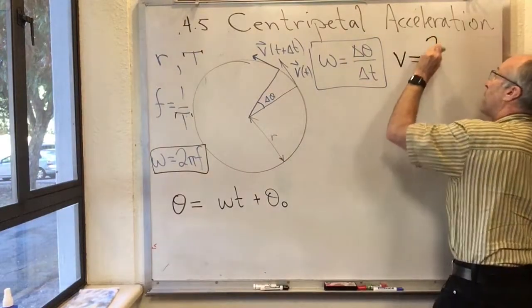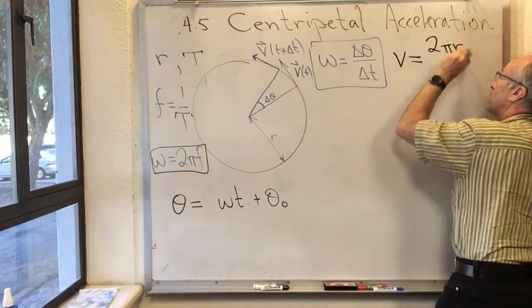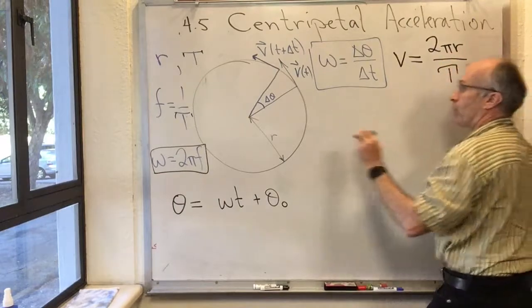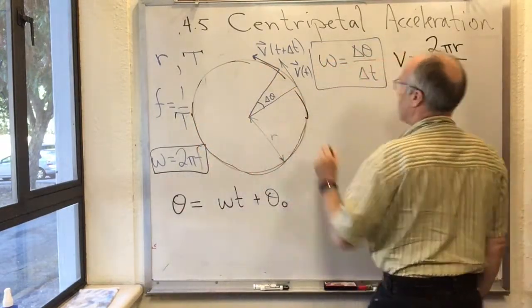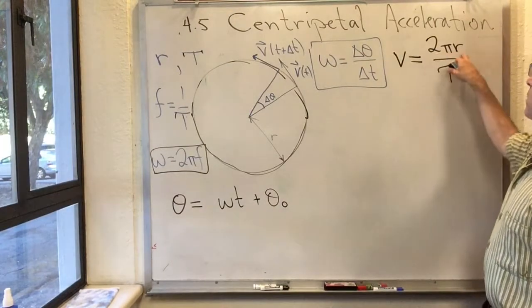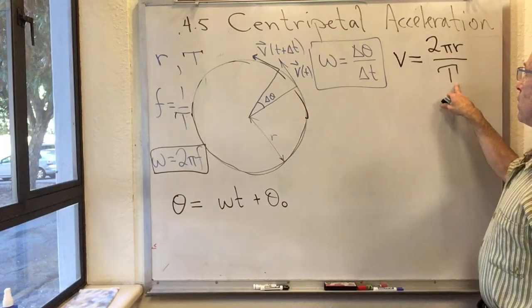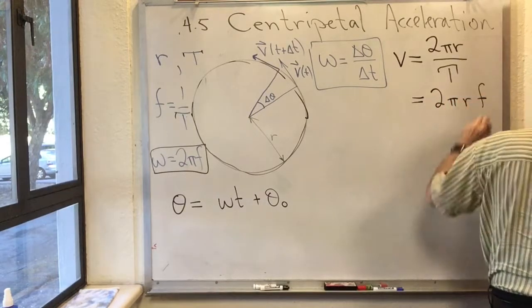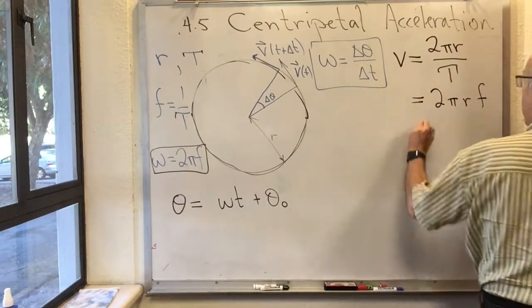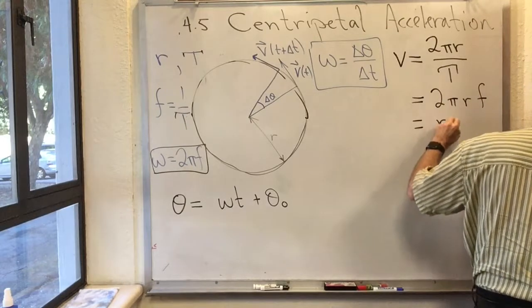It's 2 pi r, the total circumference, over the period. Because after all, in one period, you go all the way around. So your speed must be the circumference over the period. This is 2 pi r f. But since 2 pi f is omega, this is also r omega.